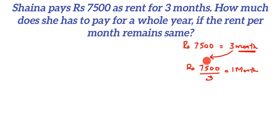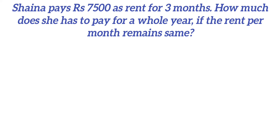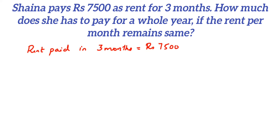Now let us frame the question. We are going to give the statements and solve this. So, rent paid in 3 months is equal to Rs. 7500. Rent for 1 month will be equal to 7500 divided by 3, which will be 2500.